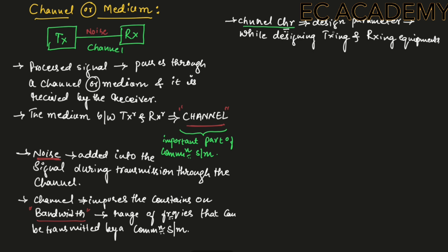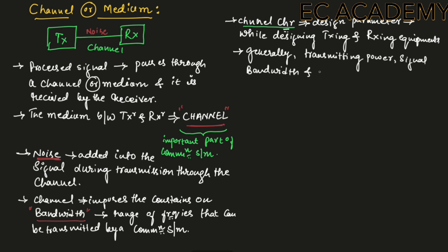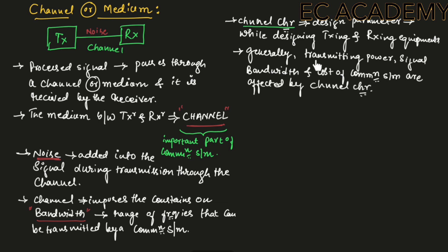The channel characteristics are considered as design parameters while designing the transmitting and receiving equipments. Generally, transmitting power, signal bandwidth, and cost of communication systems are affected by channel characteristics.